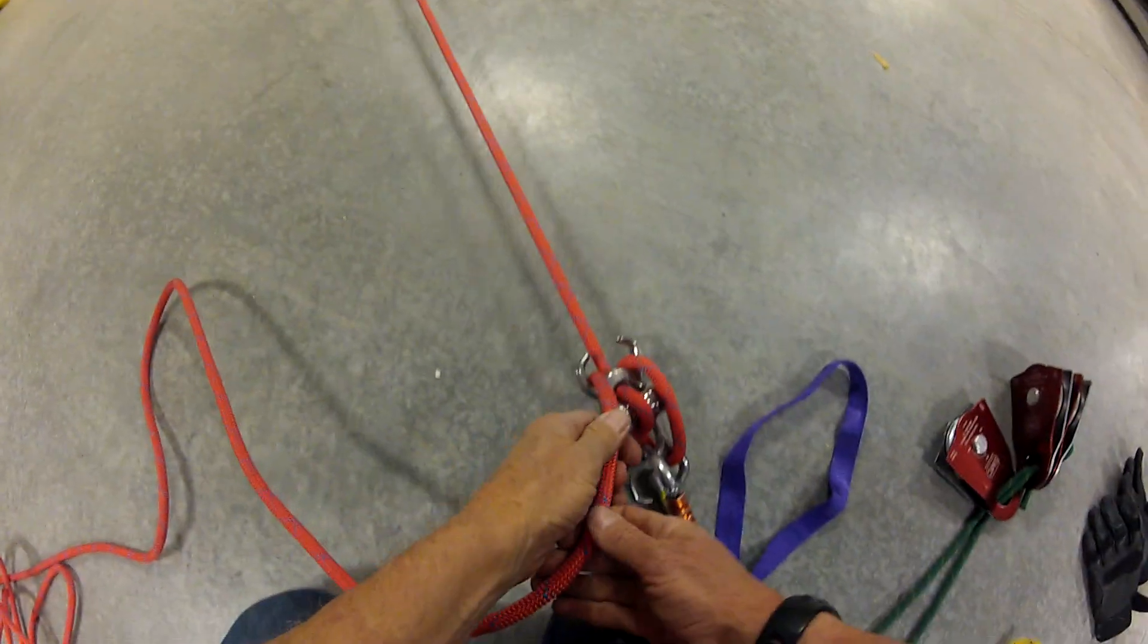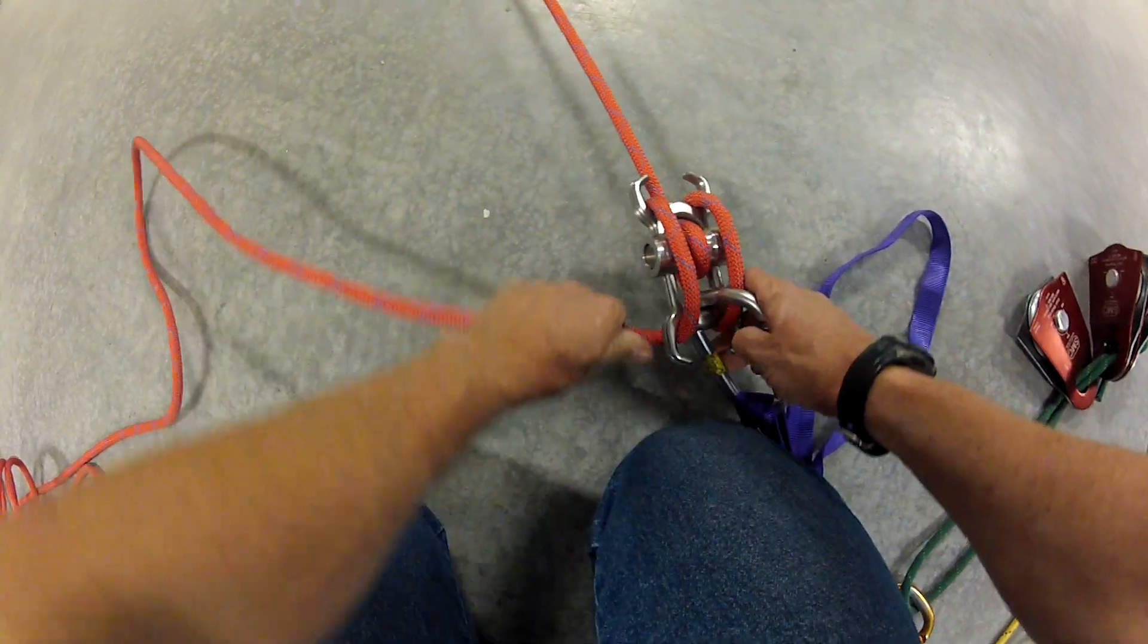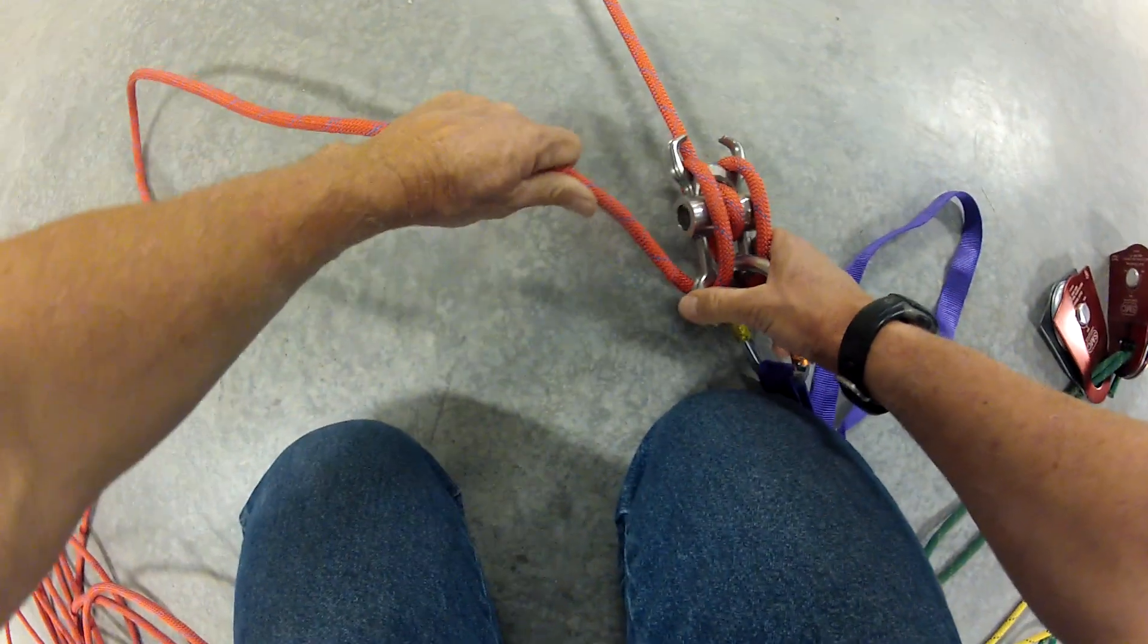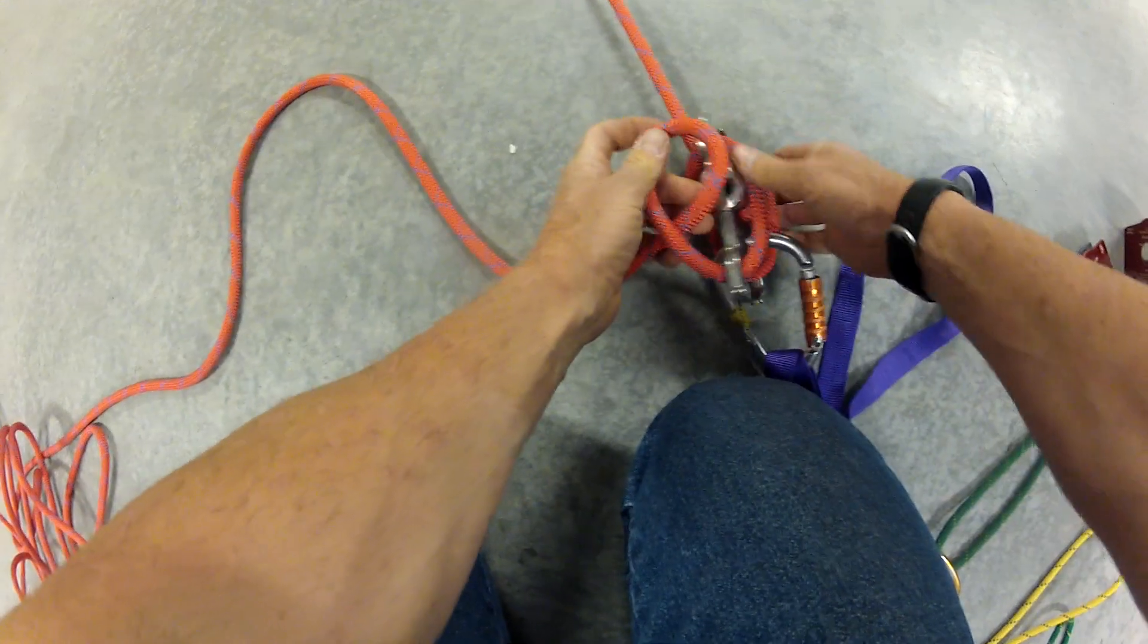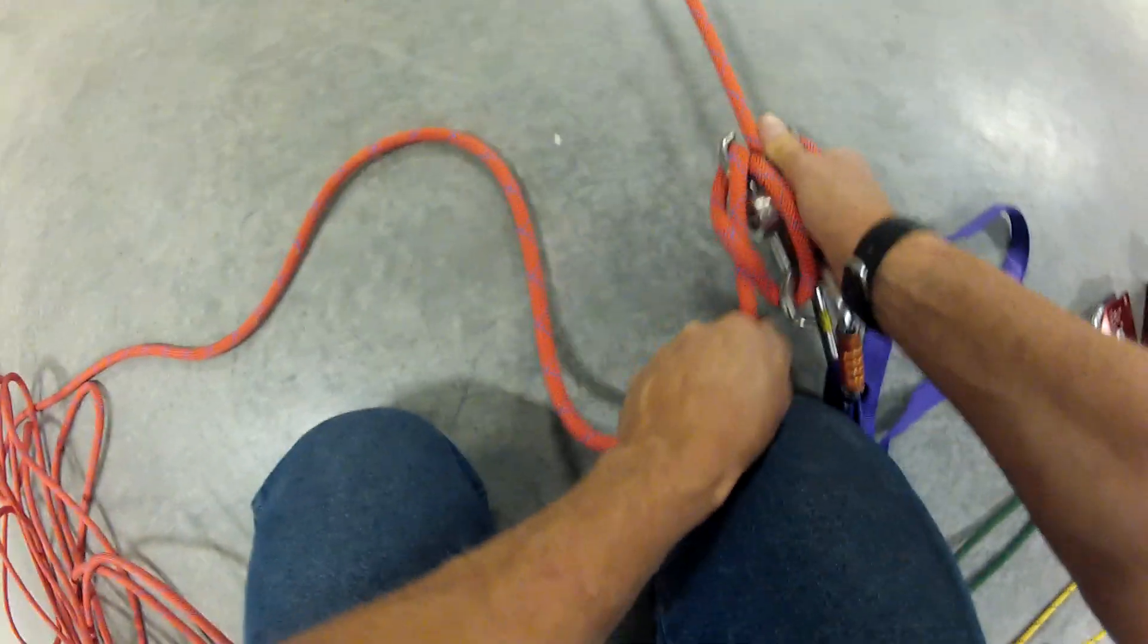So the first thing I'm going to do is I'm going to ply all the horns, and then I'm going to put my lock off with my two half hitches.